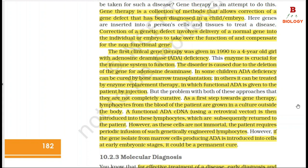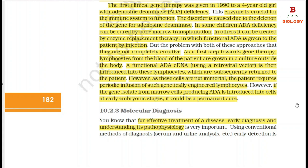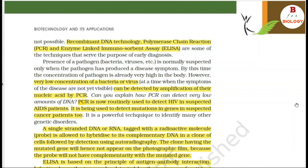Section 10.2.3: Molecular Diagnosis. For effective treatment of a disease, early diagnosis and understanding its pathology is very important. Using conventional methods of diagnosis such as serum and urine analysis, early detection is not possible. Recombinant DNA technology, polymerase chain reaction (PCR), and enzyme-linked immunosorbent assay (ELISA) are some techniques that serve the purpose of early diagnosis. Very low concentration of a bacterium or virus — at a time when symptoms of the disease are not yet visible — can be detected by amplification of their nucleic acid by PCR.